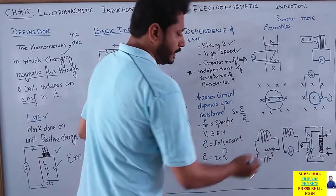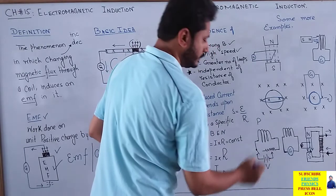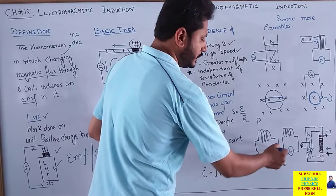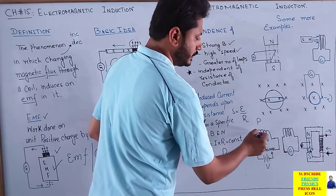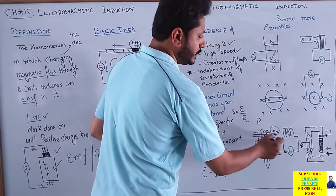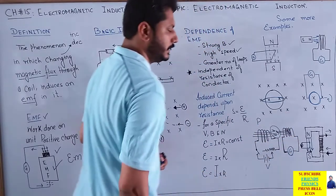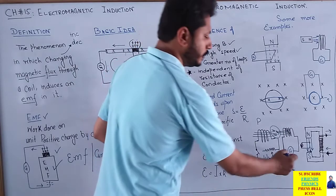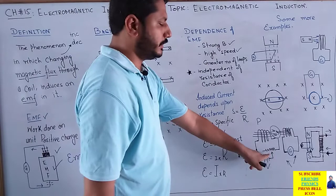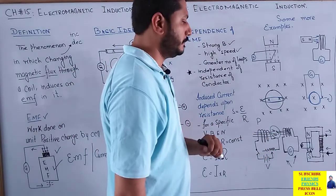یہ mutual induction کی ایک example ہے: primary coil ہے، اس کے ساتھ battery attach ہے اور ایک rheostat attach ہے جو potential کو vary کر سکتا ہے۔ اگر potential change کریں تو magnetic field strength بھی change ہوگی، اور یہ changing magnetic field دوسری coil میں flux کو change کرے گی۔ دوسری coil کے ساتھ battery نہیں لیکن galvanometer deflection دکھائے گا — positive side پر بھی اور negative side پر بھی — depend کرتا ہے کہ current increase کر رہے ہیں یا decrease۔